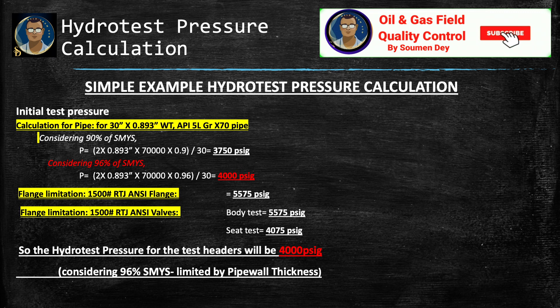Now we consider all components present in the pipeline. For a 1,500-rating ring joint ANSI flange, as per ANSI standard the test pressure is limited to 5,575 psig. For a 1,500-pound RTJ ANSI valve, it is limited to body test at 5,575 psig and seat test at 4,075 psig. Therefore, the hydro test pressure of the pipeline is 4,000 psig — considering 96% SMYS, limited by pipe wall thickness.